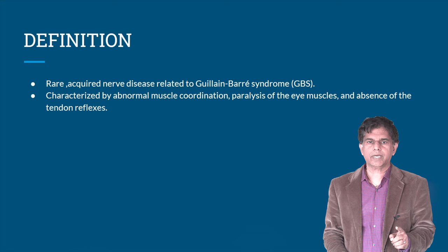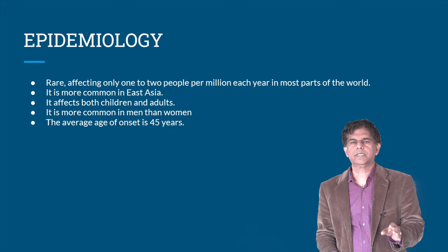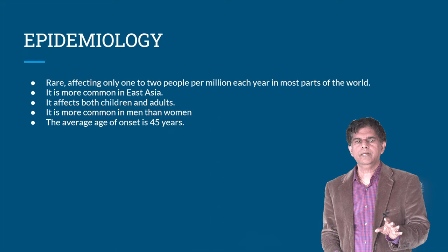Epidemiology: it's rare, affecting one to two people per million each year in most parts of the world. It's more common in East Asia. It can be seen in both children and adults, is more common in men, and the average age of onset is around 45 years.